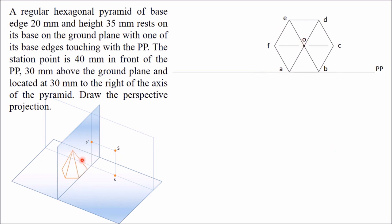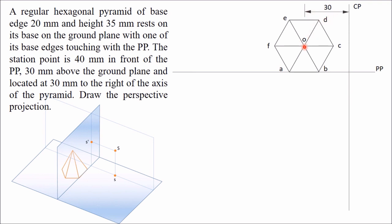The six corner points are A, B, C, D, E, and F. In this way the top view is completed. Now I will draw the top view of the central plane, which is at a distance of 30 mm from the axis of this pyramid — so from the axis, this central plane is 30 mm towards the right side.